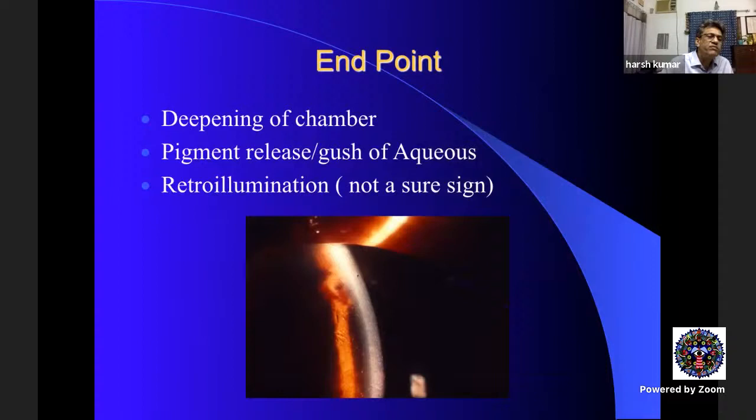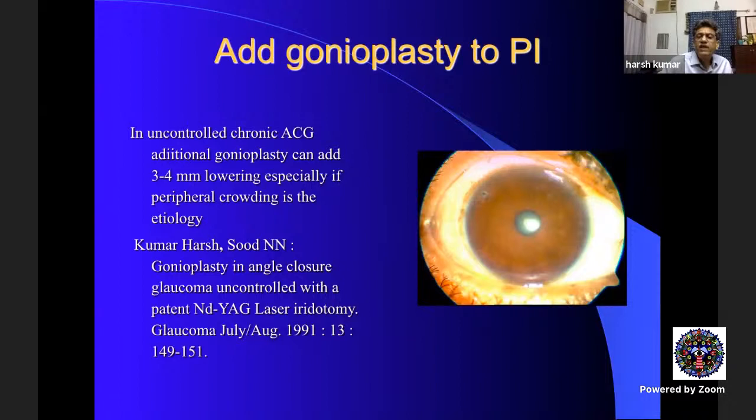The endpoint is a sudden deepening of the anterior chamber with a gush of aqueous and pigment moving from the posterior to the anterior chamber. Retro-illumination is not a sure sign of a patent iridotomy. If after iridotomy the chamber seems shallow and gonioscopy shows the angle is still nearly closed, you can add gonioplasty — small coagulative laser spots — which we have shown can open the angle further and may lower pressure.